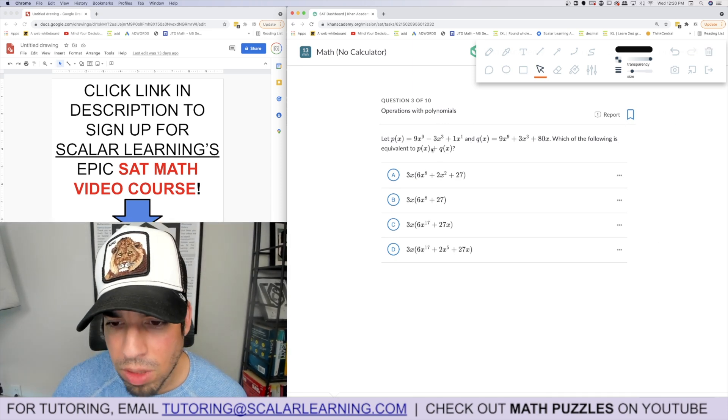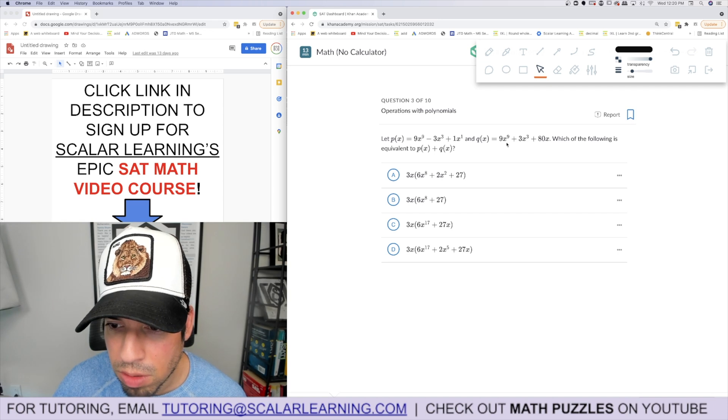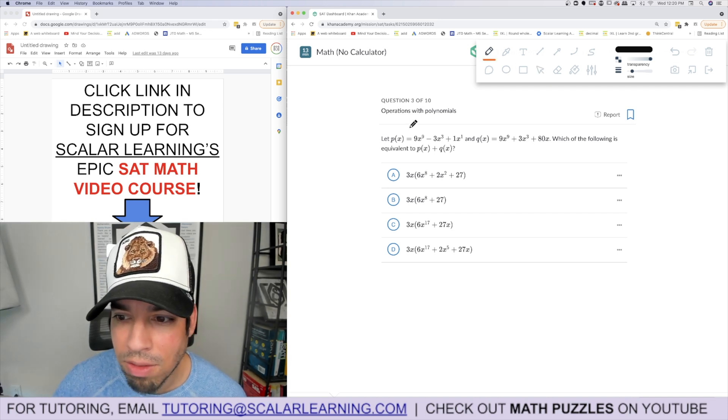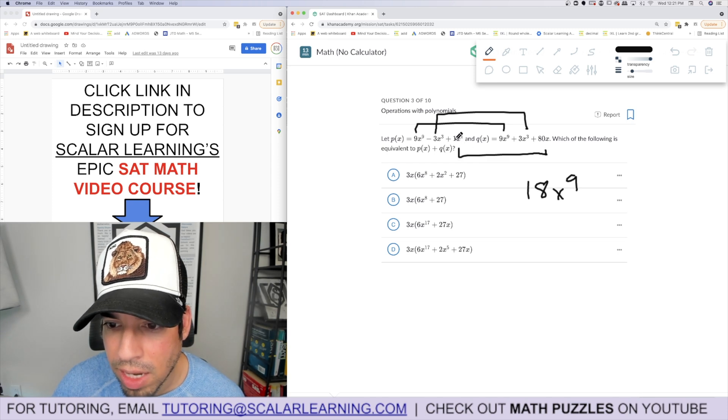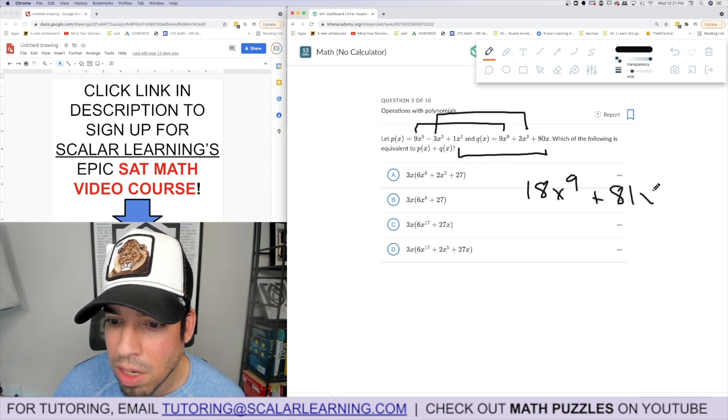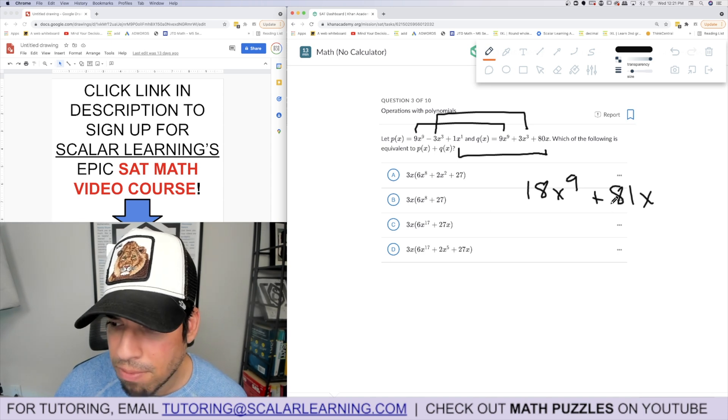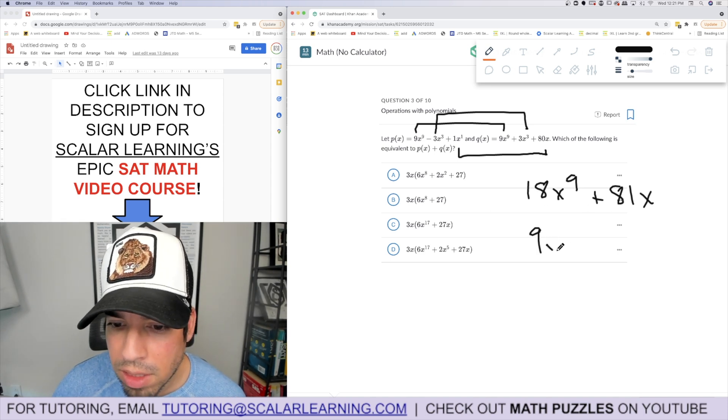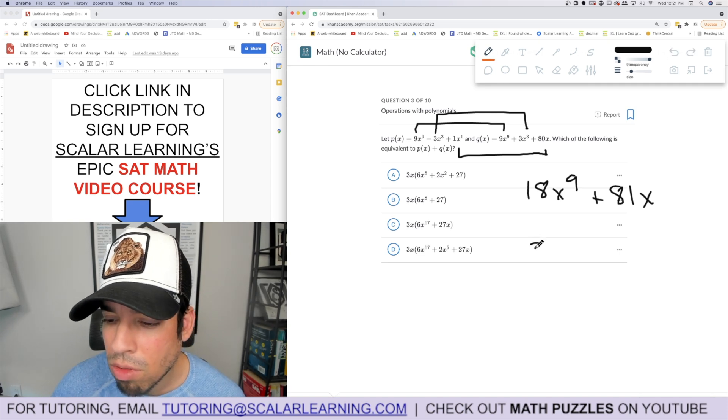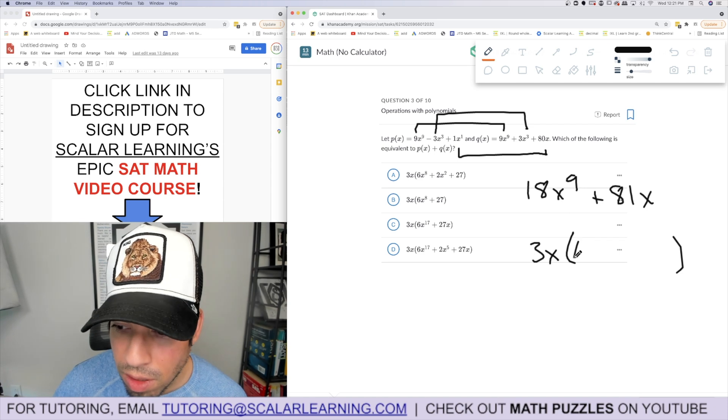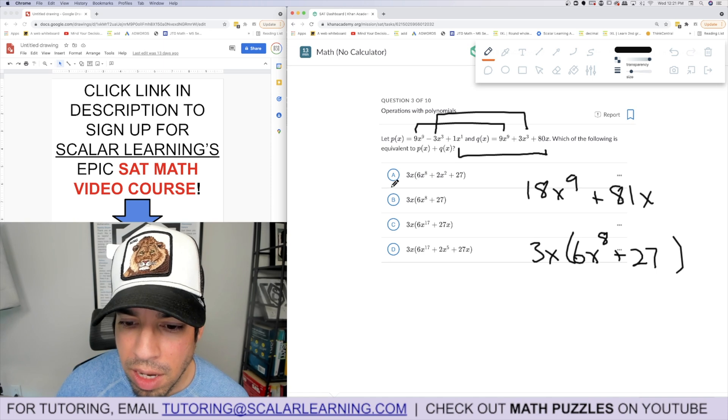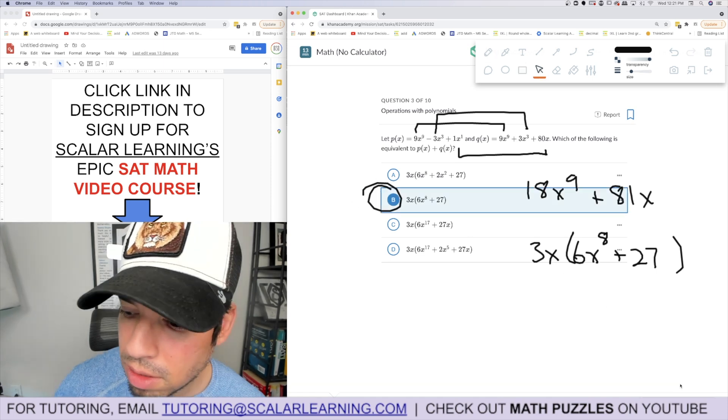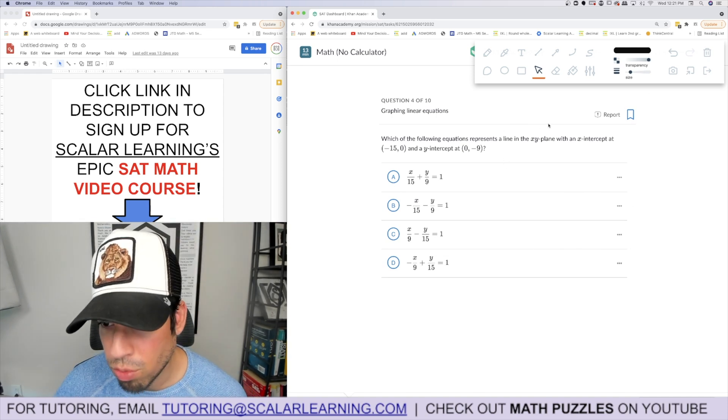The p of x equals nine x to the ninth minus three x cubed plus one is below, which is equivalent. Okay, so they're just adding the functions together, combine like terms. So that's 18x to the ninth, combine these guys, those cancel out, and combine these guys. x to the one is the same as x plus 81x. Looks like they factored a three x out of both. Six x to the eighth, this would be 27, six x to the eighth. Boom, B is the winner.